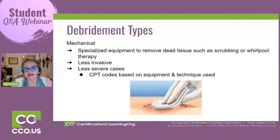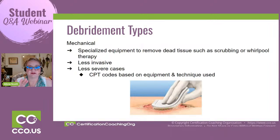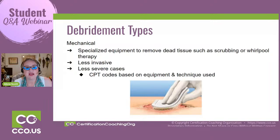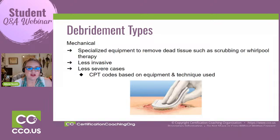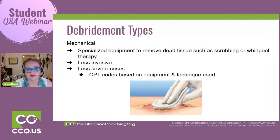Mechanical debridement is an absolutely less invasive type of debridement for less severe cases. In that scenario, they thought the patient had no more than first-degree burns, but the patient was uncomfortable and couldn't walk because of the asphalt stuck to the feet — and the longer that hot asphalt stayed on, the more problematic it became and could cause deeper burns. With mechanical debridement, there are CPT codes, and they're going to be related to the equipment or technique used. There are specific whirlpool codes that you will be working with.